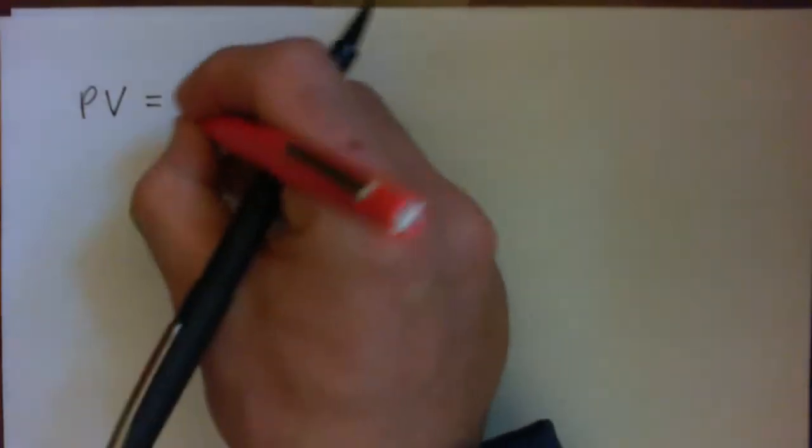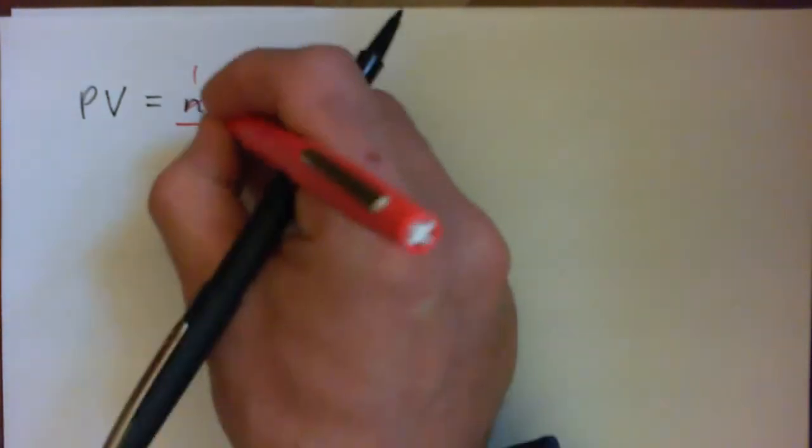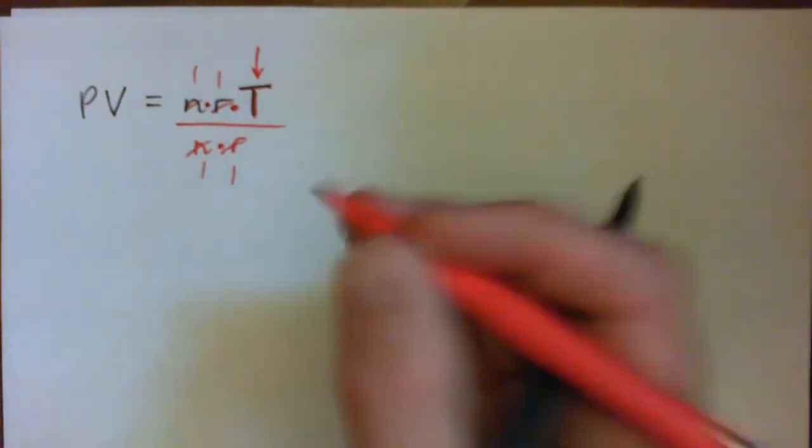Now if we do that, the n's will cross-cancel, great. The r's will cross-cancel, that's great, and we're left with T on its own, which is what we want because we're solving for T.